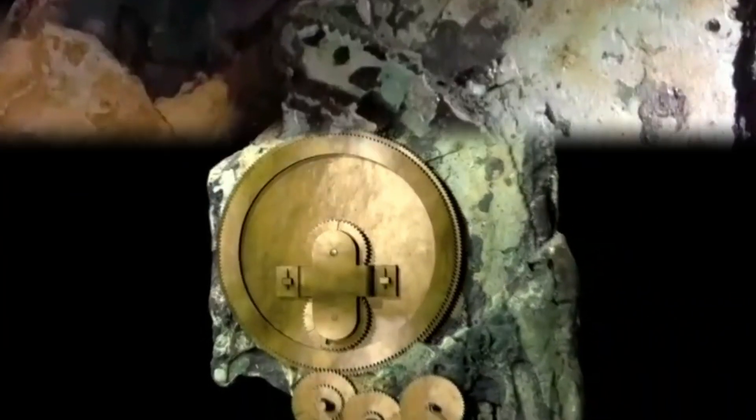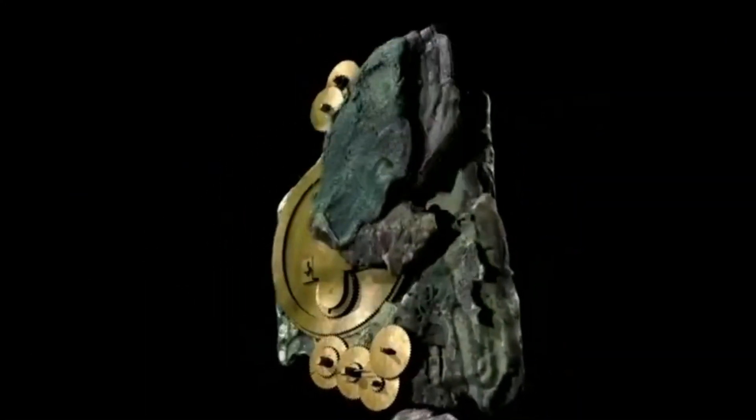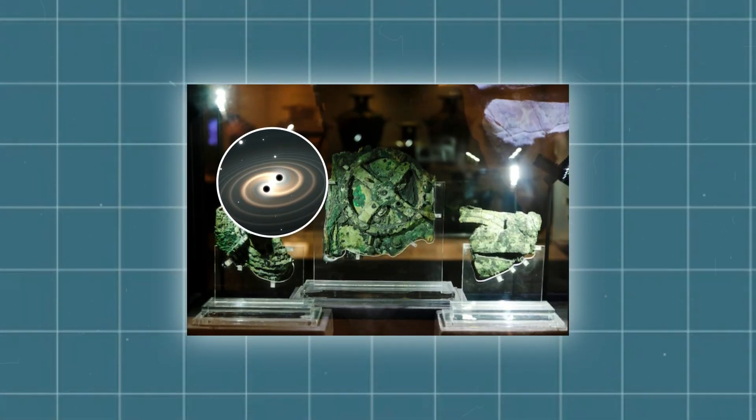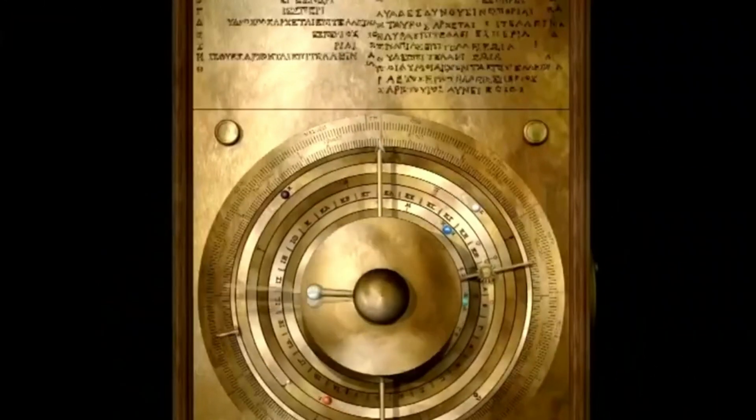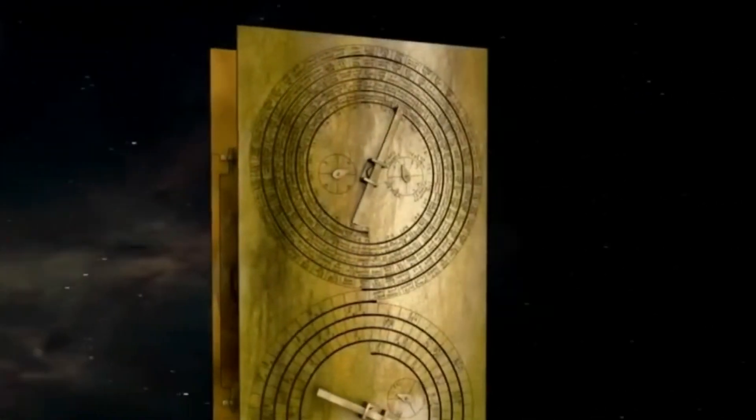This motion, where planets seemed to move backward due to Earth's orbit, was explained by epicycles in the geocentric model. The mechanism's gears simulated these complex paths, a feat requiring precise calculations and engineering.